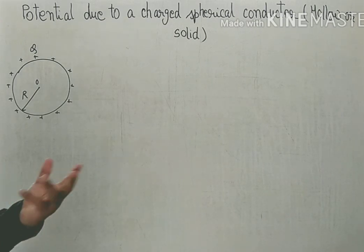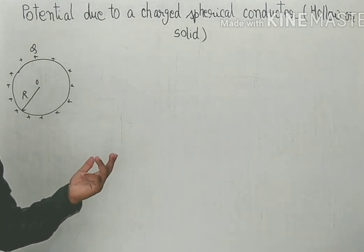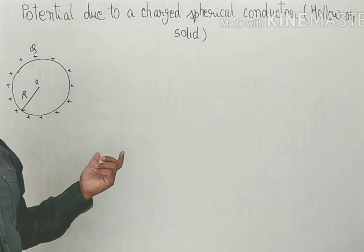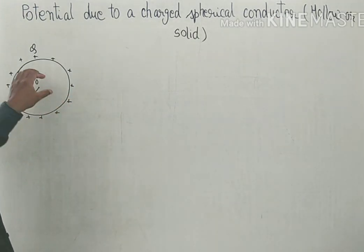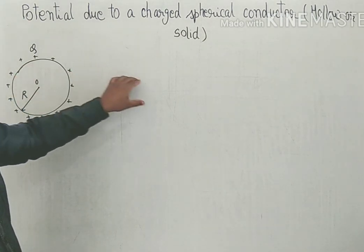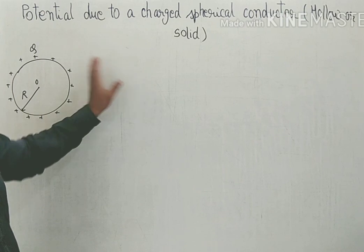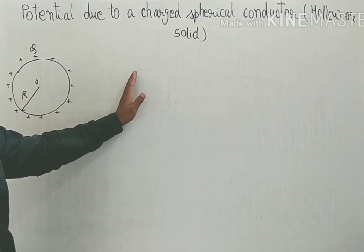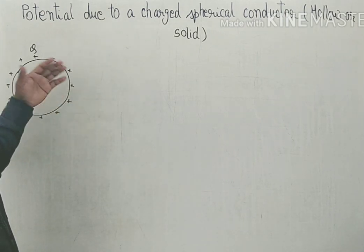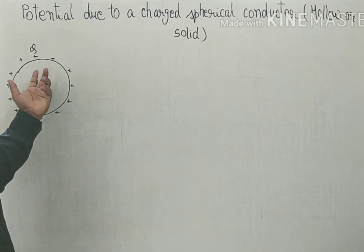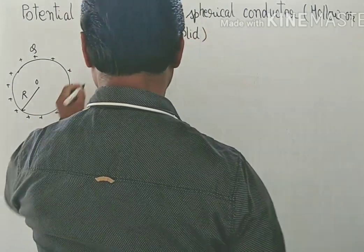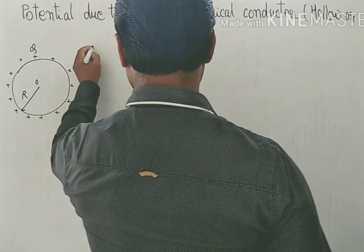As discussed earlier in electrostatic field intensity calculation, the test point might be outside the surface of the sphere, may be on its surface, or may be inside its surface. So let's discuss those three cases individually. Case number one: